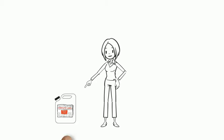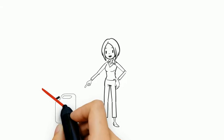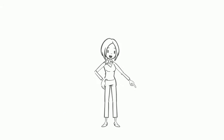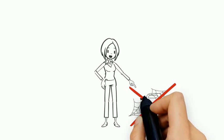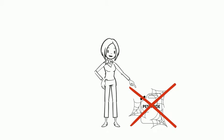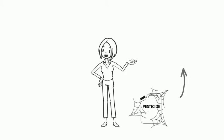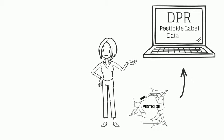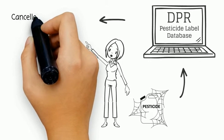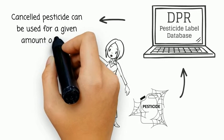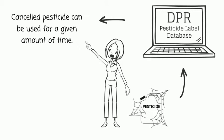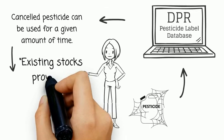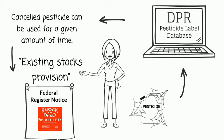Never remove a pesticide label from its container or use unlabeled pesticides. It is not recommended to use pesticides that were stored for long periods of time, as regulations for their use may have changed. In case you intend to use a pesticide that was bought a long time ago, verify its status first in DPR's pesticide label database. If a pesticide or a use was canceled, the pesticide can still be used on that crop for a given amount of time. This is referred to as existing stocks provision, and usually accompanies a notice to cancel a product or specific use.